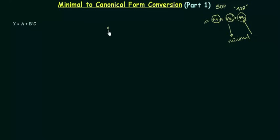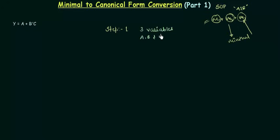Step number 1: find out the variables — the number of variables and what they are. You have to look at the min terms and identify how many variables there are and what they are. I can see A, B, C. So we have three variables and they are A, B, and C. This is a very simple step — you just write down the variables that you can see in the question.